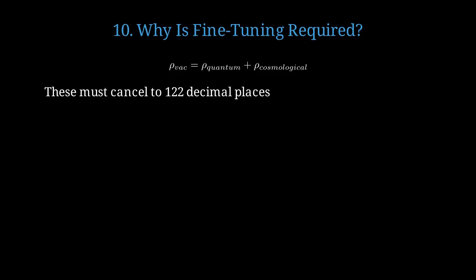these two enormous numbers must cancel each other out to 122 decimal places. This is like balancing on a knife edge thinner than an atom. The cancellation must be precise to one part in 10 to the 122. This is far beyond any known physical mechanism for fine-tuning.